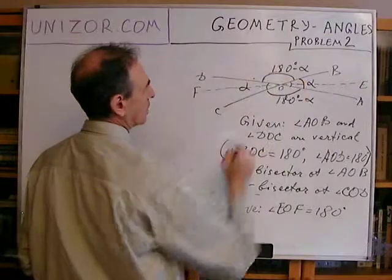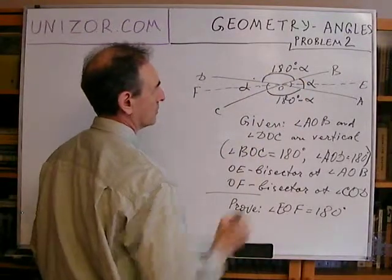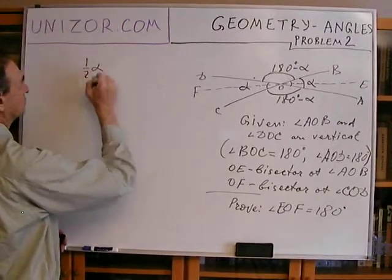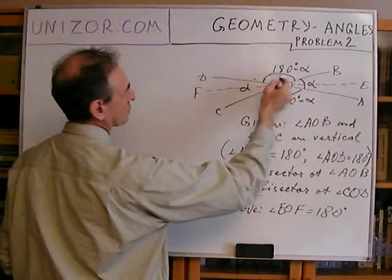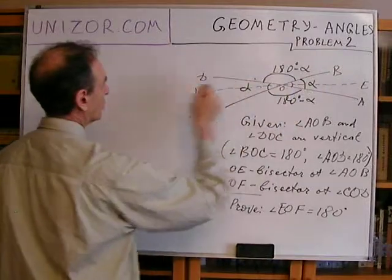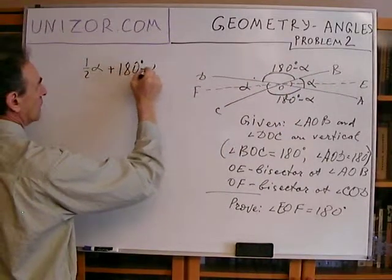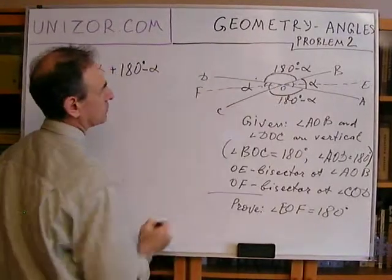First, we have to cover half of this angle, which is one half of alpha. Then we have to count all this angle, which is 180 minus alpha, and then another half of alpha.